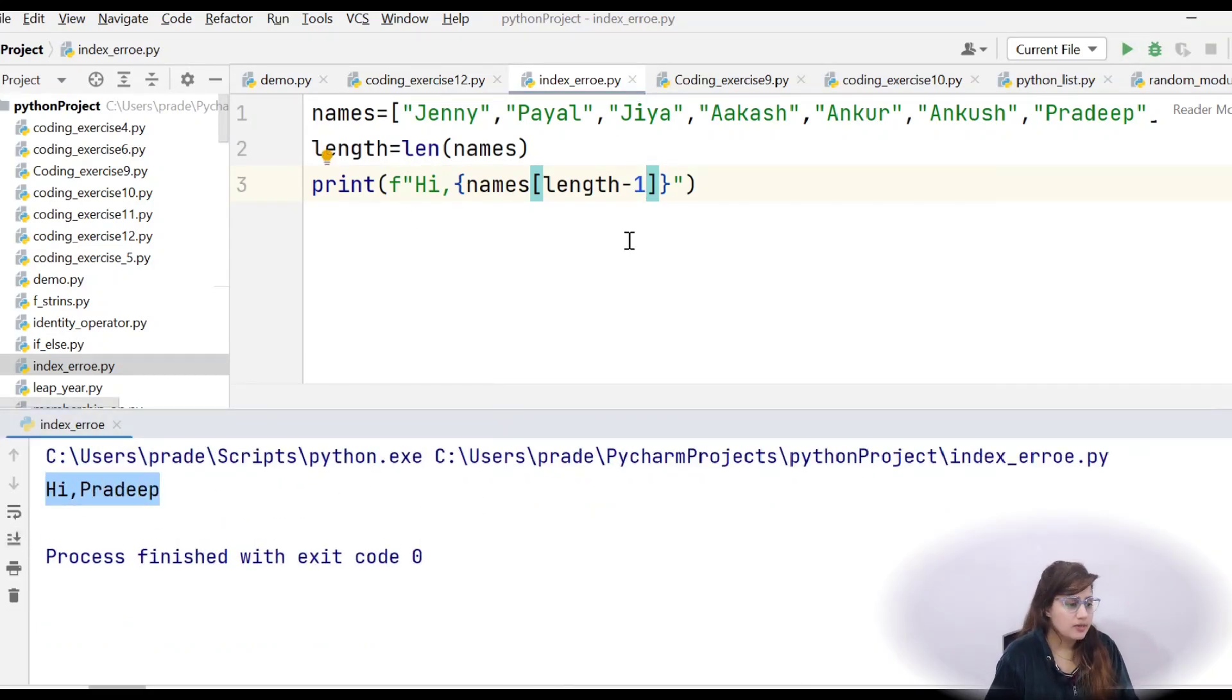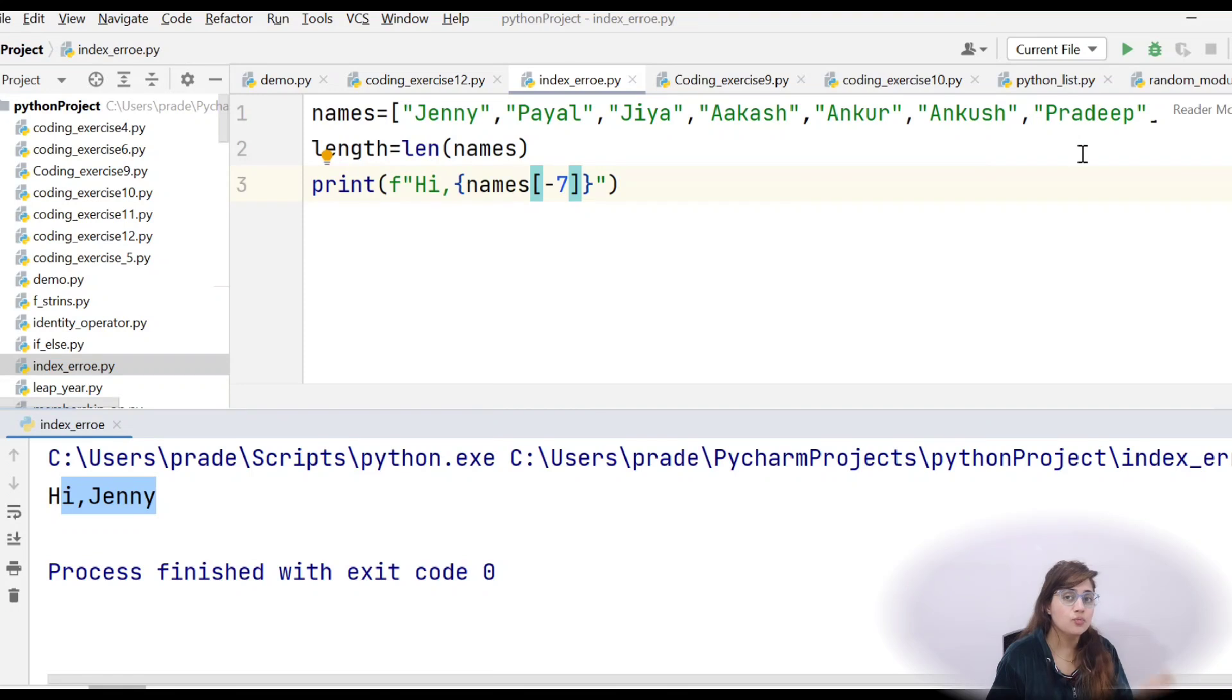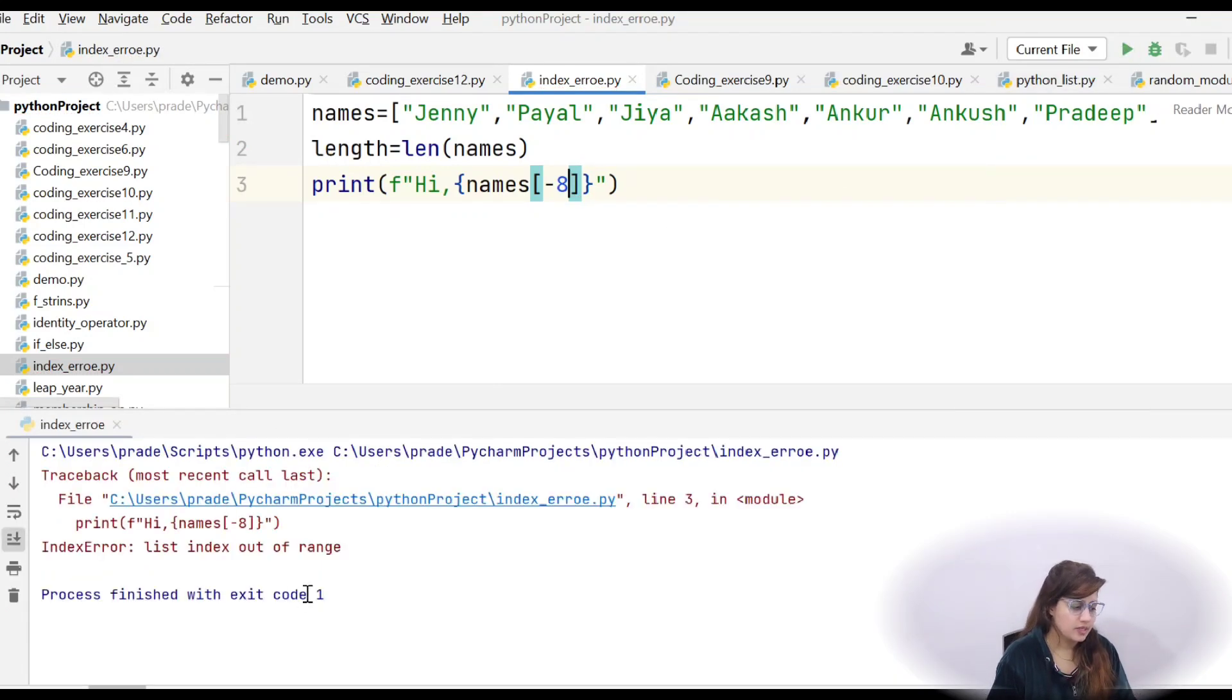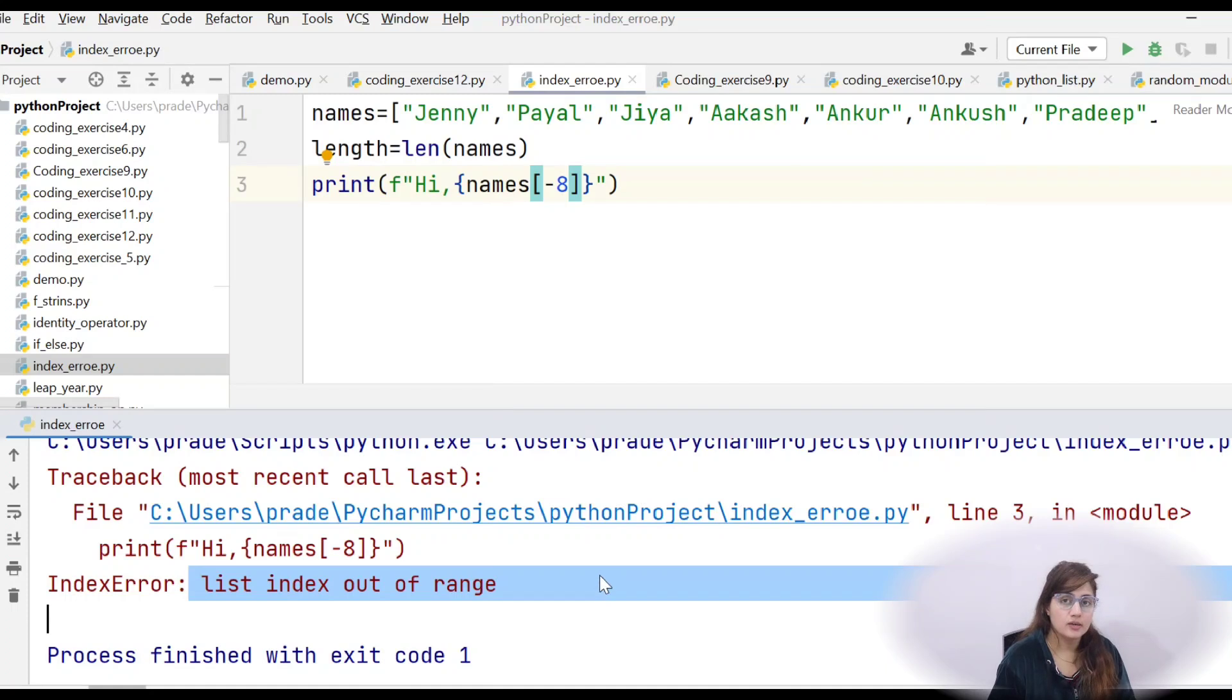Same for minus negative indexing also. So if suppose I write here minus 7. See, minus 7. Then it will print Jenny. High Jenny. Because negative indexing start from minus 1 not 0. Because minus 0 is nothing. It's only 0. Not minus 0. That is why negative index start from minus 1. So minus 1 to minus 7. But if you want to access minus 8. Then, same. Index error you will get here.